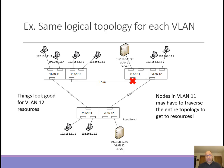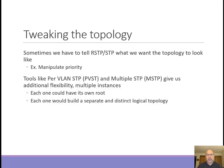Wouldn't it be easier if that port was not blocked and a port on the opposite side of the topology was blocked, so everybody just had to go part of the way? Consider VLAN 11 — a server is on the upper right switch. If you're in the upper left, you have to go all the way around. But for VLAN 12, with a server on the lower switch, you have an optimal topology. Spanning tree optimized things for one VLAN but didn't optimize for another. If we can't move the servers, we might want to manipulate spanning tree to make more sense for each particular VLAN.